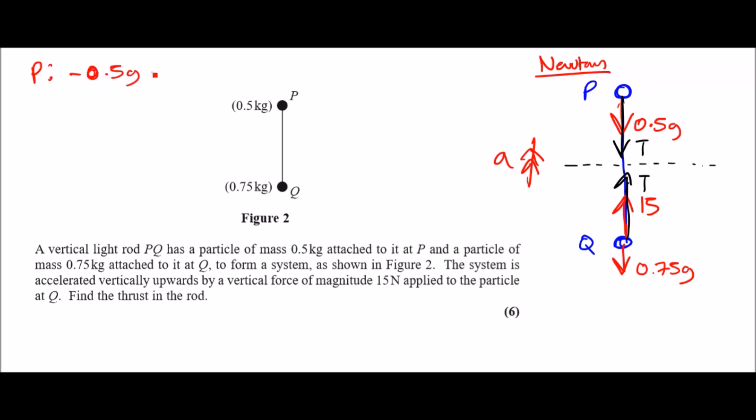Resolving towards the direction of the acceleration, so upwards, we're going to have minus 0.5g minus T, and this is going to equal mass times acceleration, so 0.5 times a. Now at Q, same thing applies. Q's got two positive values, we've got 15 plus T.